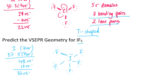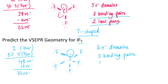After distributing all remaining electrons, I count six electron domains on the central iodine atom. Of those six domains, five are bonding pairs and one is a lone pair.